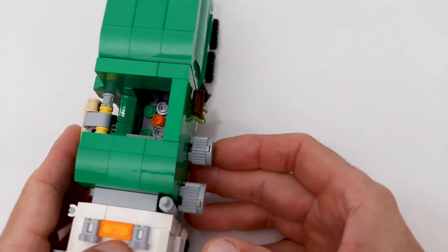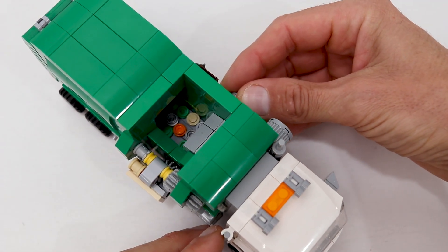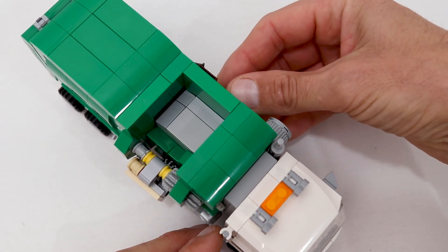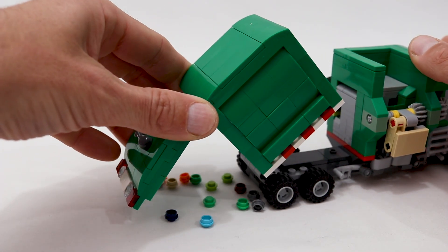There is also another knob that controls the compacting ram which pushes the trash from the hopper into the dumper. And when you're ready to dump your trash, you can just tip the dumper and open the tailgate.